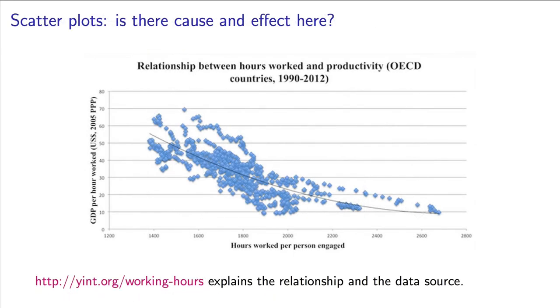Here is another correlation. The number of hours worked per week, shown on the x-axis. And the y-axis is the GDP per person, a measure of productivity.